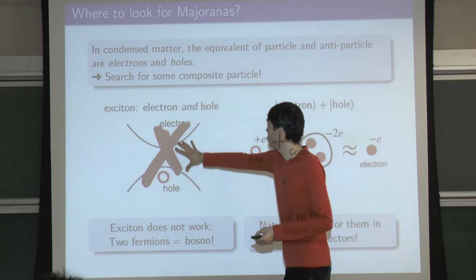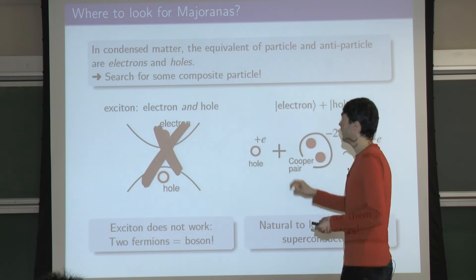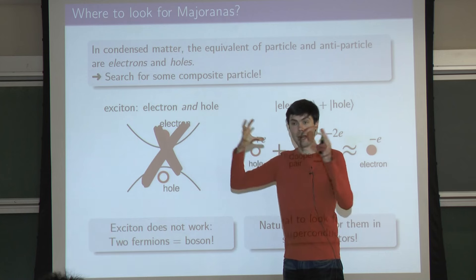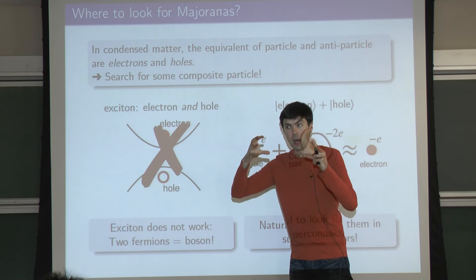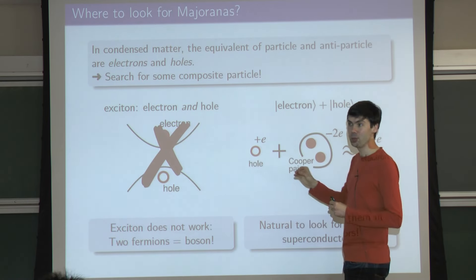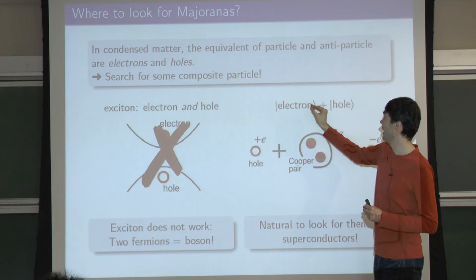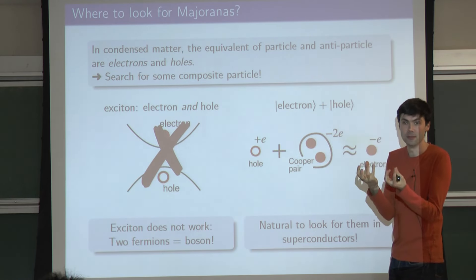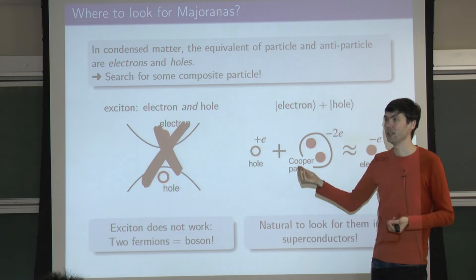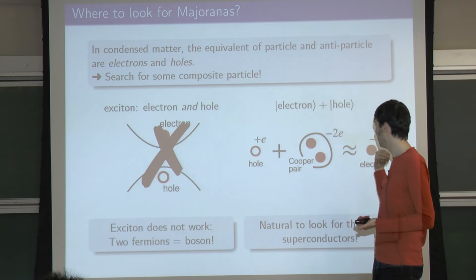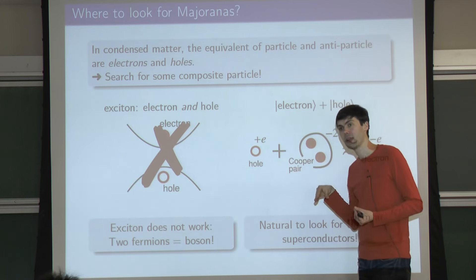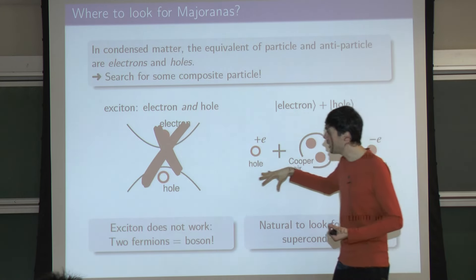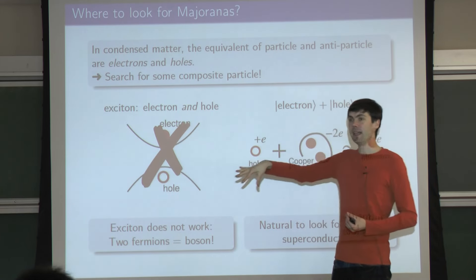Excitons are bosons - you can study Bose-Einstein condensation of excitons. So those are not Majoranas. Instead of a bound state of an electron and a hole like a molecule, you have to take a superposition of an electron and a hole - a single particle that is one-half electron and one-half hole, like that half-filled circle.